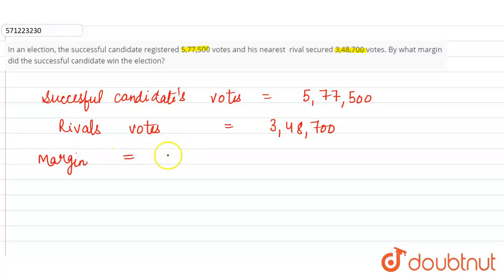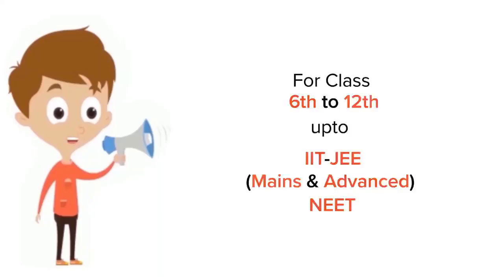we subtract the rival's votes from the successful candidate's votes. 5,77,500 minus 3,48,700. This equals two lakh twenty-eight thousand eight hundred. For class six to twelve,